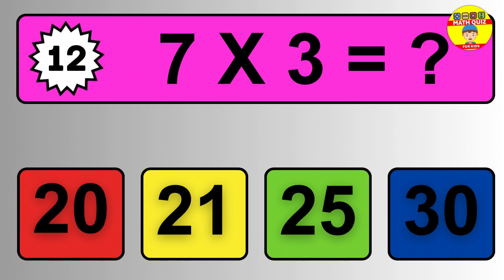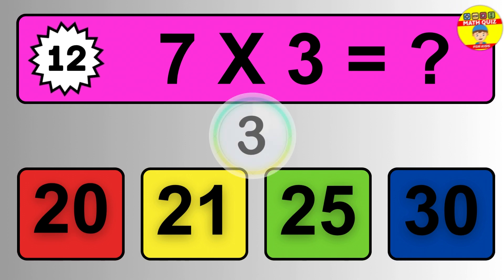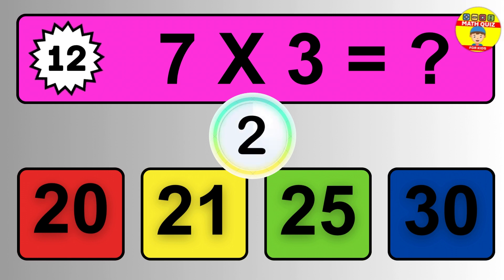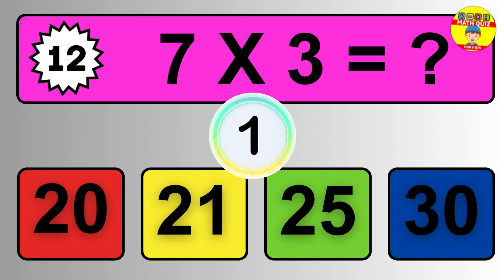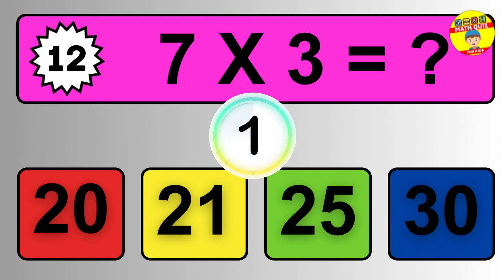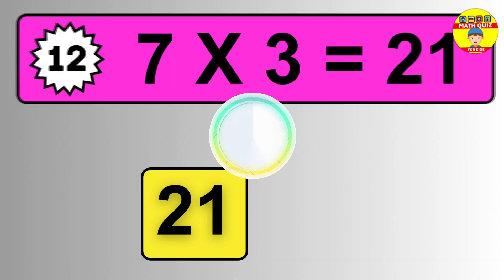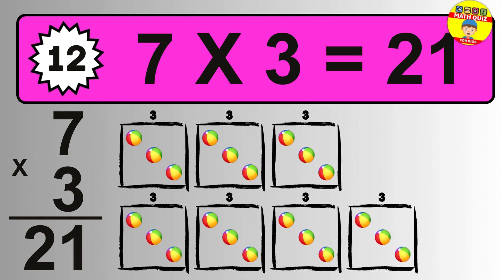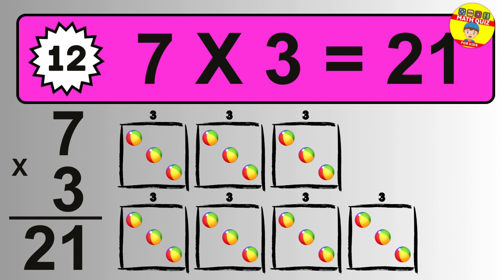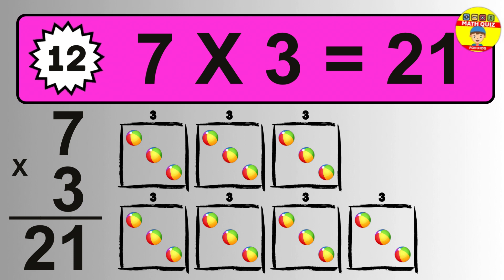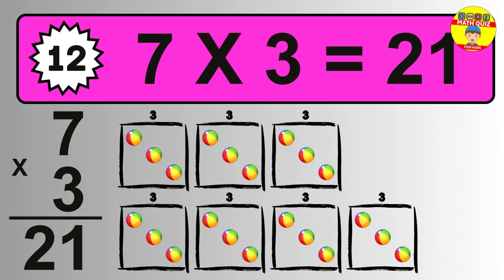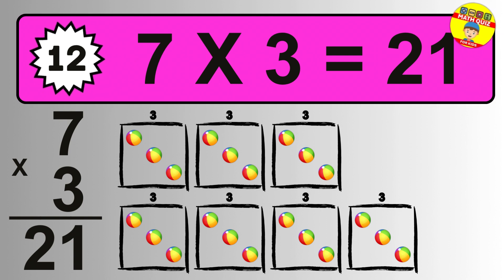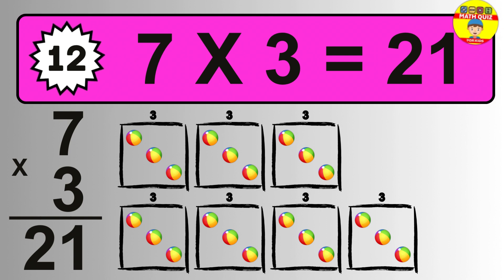Question twelve: seven times three equals what? The answer is seven times three is twenty-one. To calculate, we have seven groups with three balls each. So how many balls do we have? Twenty-one balls.